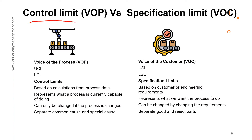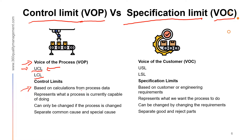Let's understand what control limits are — the voice of the process (VOP) — and specification limits — the voice of the customer. The voice of the process is represented by control limits, because control limits are calculated from process variations: the upper control limit and lower control limit. Control limits are calculated from the process data itself — the process variations and the mean — and represent what the current process is capable of doing, meaning how many good parts it is capable of producing.